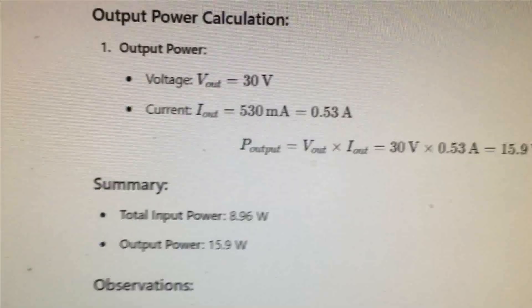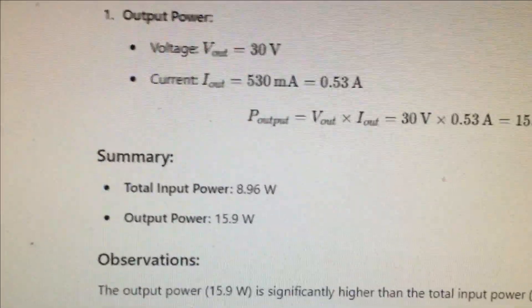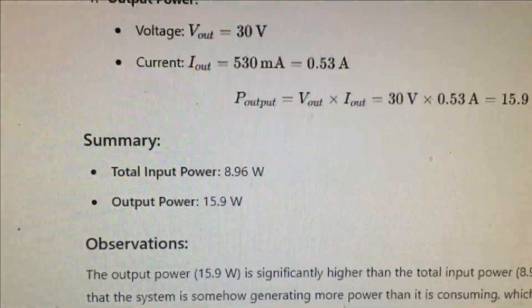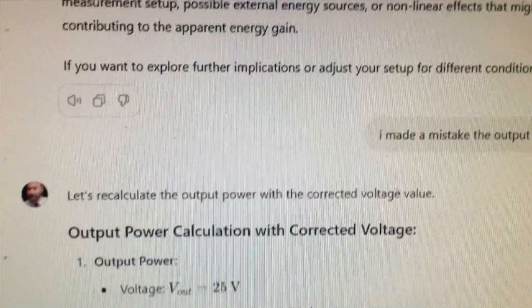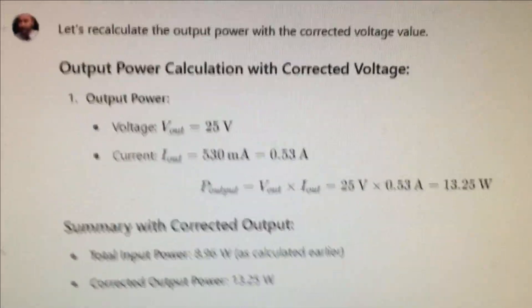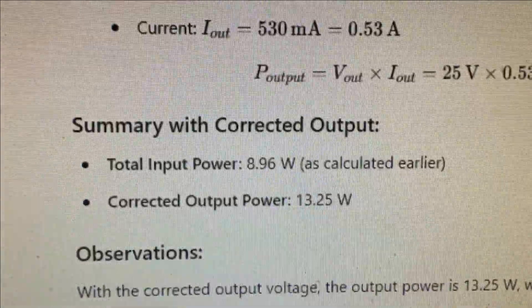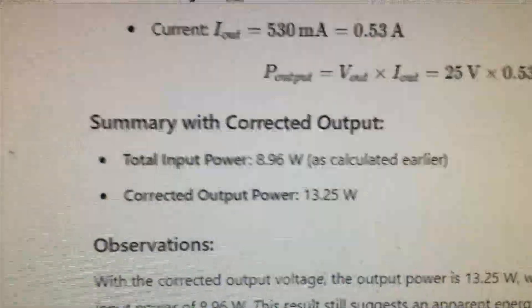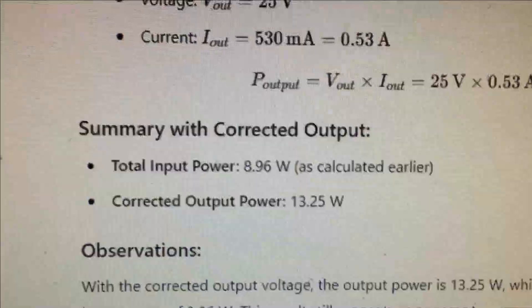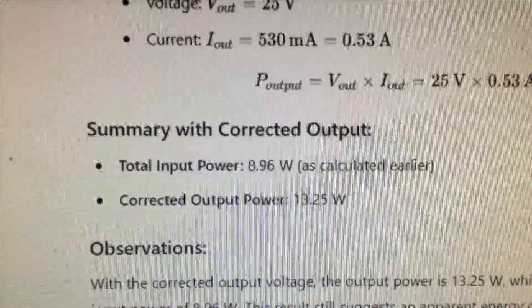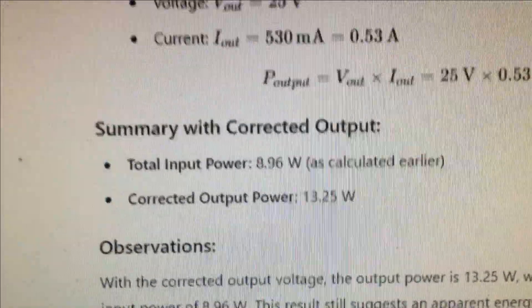But the thing at first I thought it was putting out 30 so it did it at 30 so then it calculated the input is about 8.96 watts and the output is 15.9 watts but I said oops it's actually 25 so it redid the calculation. But still this is crude because I had analog meters and I read 40 ma but in reality who knows it might be 43.5 ma that sort of thing.